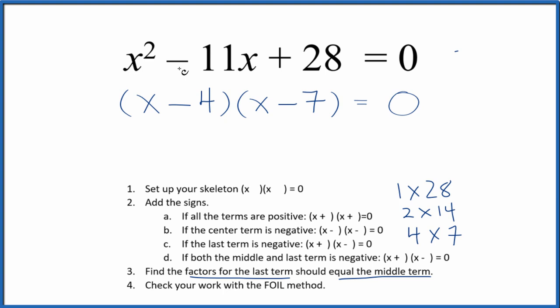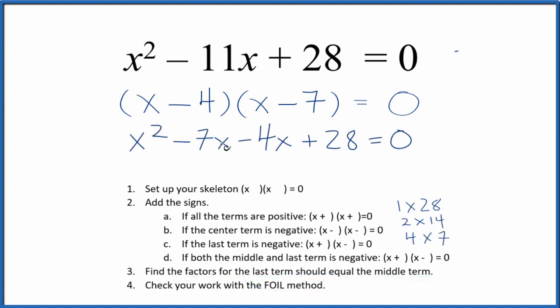We factored the equation x squared minus 11x plus 28. But we should check our work with the FOIL method. We'll multiply the first, the outside, the inside, and the last terms. And if we add the negative 7x and the negative 4x together, we get, and this is what we started with. So we did this part correctly.